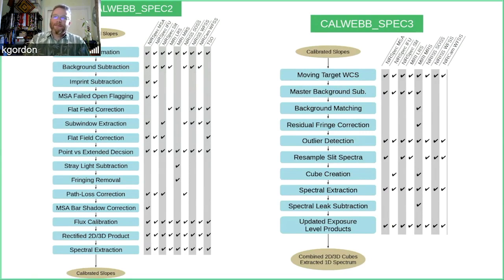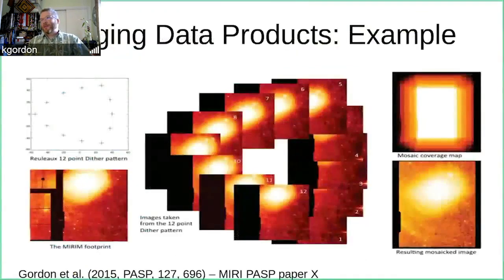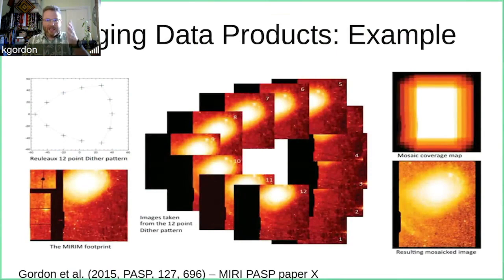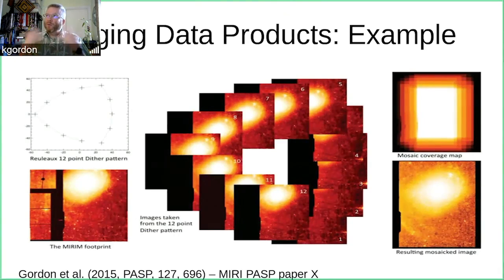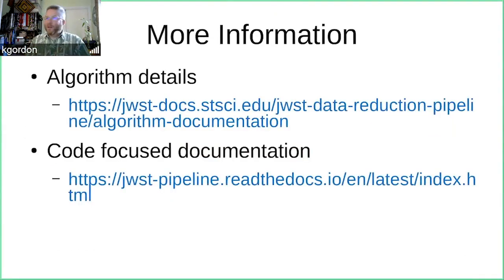Finally, here's an example of the data products that come out of the pipeline. You get individual calibrated images, and then also an ensemble — say 12 exposures in this case — all calibrated with WCS and position information. And then you also get a combined mosaic, which might not be perfect but is a solid starting point straight out of the pipeline. More information is available at the resources already referenced.